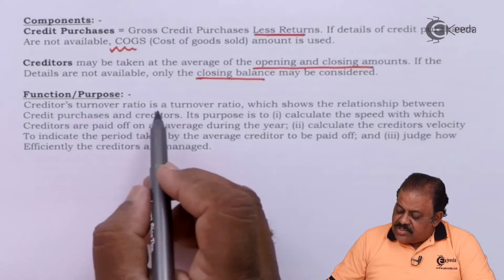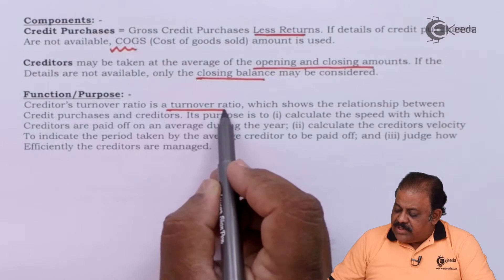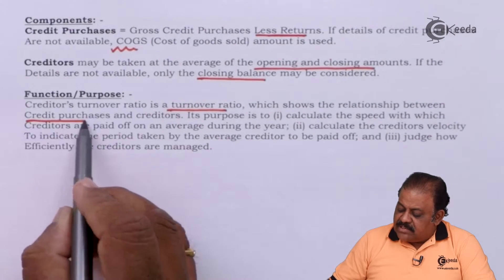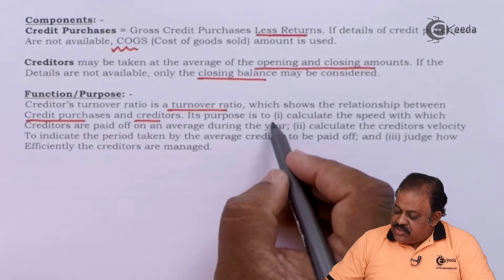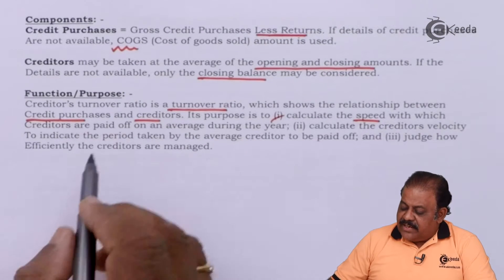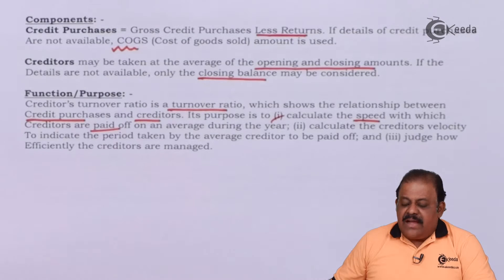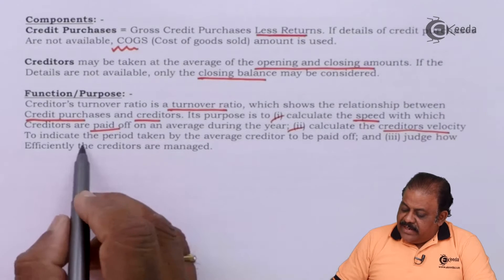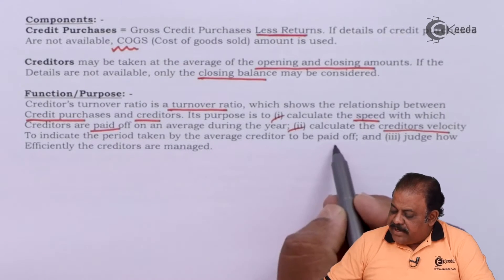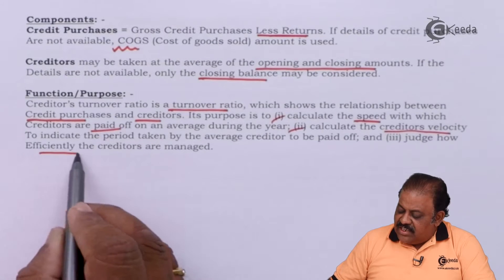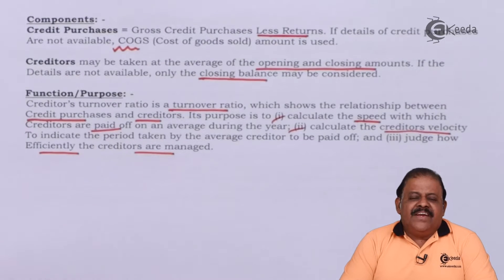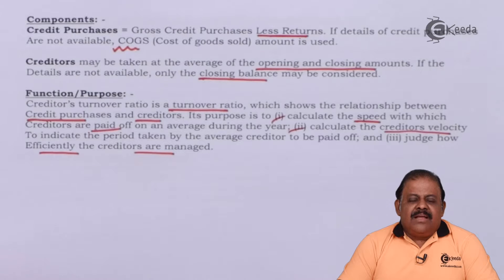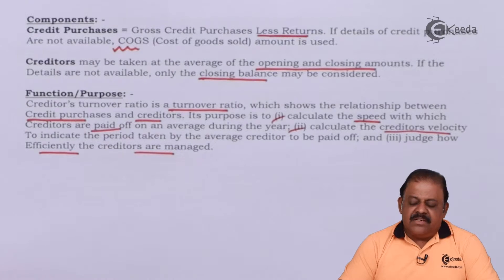Functions and purpose: Creditors turnover ratio is a turnover ratio which shows the relationship between credit purchases and creditors. Its purpose is to calculate the speed with which creditors are paid off on average during the year, to calculate creditors velocity indicating the period taken by average creditors to be paid off, and to judge how efficiently creditors are managed. It shows the organization's policy to manage suppliers by making timely payments as per the credit period available.